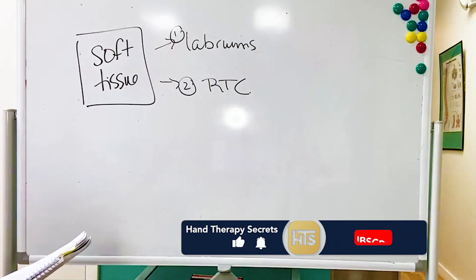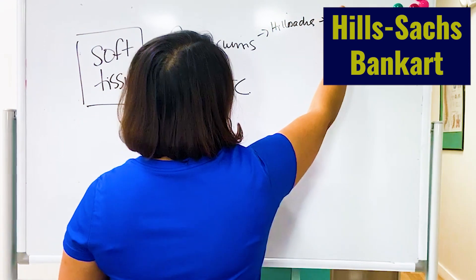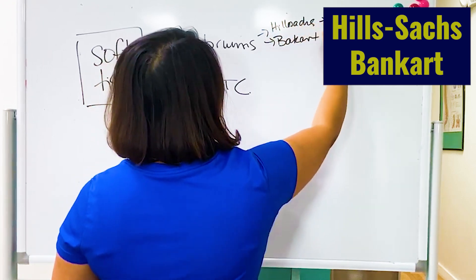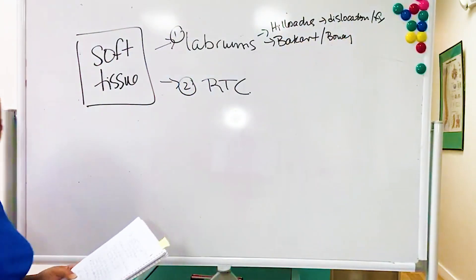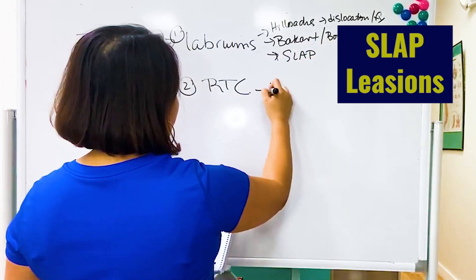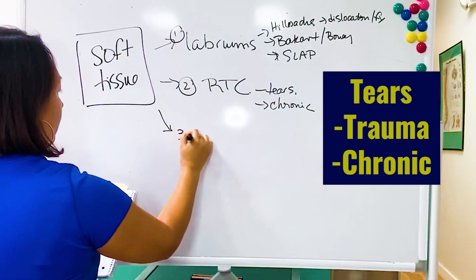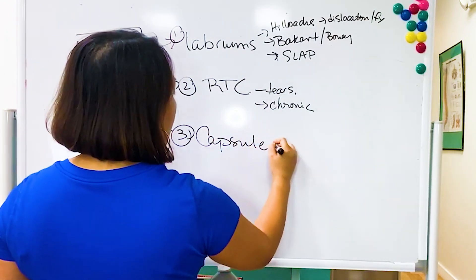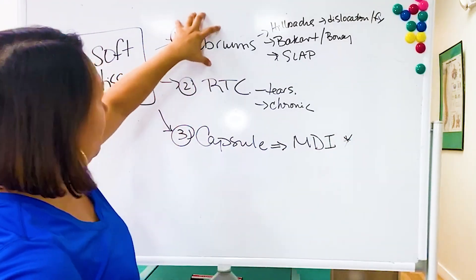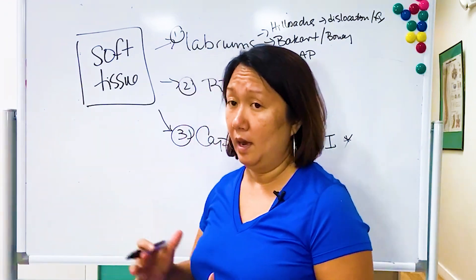Soft tissue injuries include Hill-Sachs, which is a dislocation fracture. Bankart lesions come in two types: one is just soft tissue, one is soft tissue plus fracture. Then you have your SLAP lesions, and tears which can be trauma or chronic. The other category is capsule issues, more like multi-directional instability, which overlaps with labrum but gets its own category.